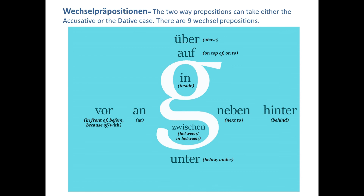So what are basically Wechselpräpositionen? They are two-way prepositions that can take either the accusative or the dative case. There are nine Wechselpräpositionen. They keep on changing — there are many prepositions available in German grammar, but only these nine are Wechselpräpositionen.